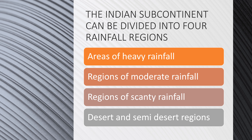The Indian subcontinent can be divided into four major rainfall regions. There are large areas which receive very heavy rainfall, those which receive moderate rainfall, there are large areas which receive very minimal or scanty amount of rainfall, and the desert and semi-desert regions which receive very little rainfall — less than 50 centimetres, or in areas further to the west, less than 20 centimetres.